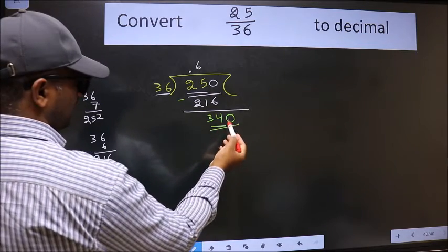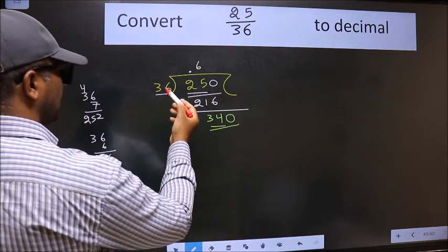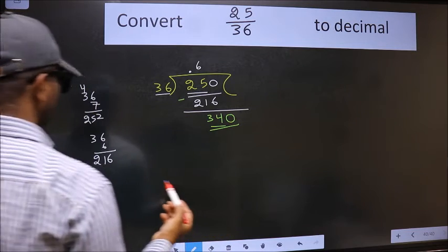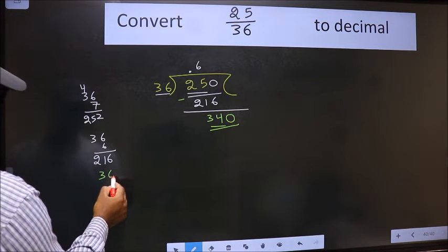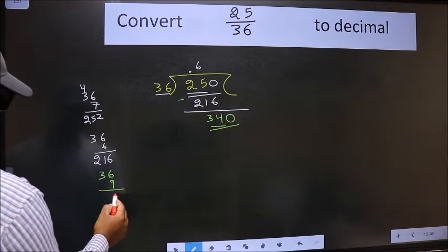So 3, 40. Our number close to 3, 40 in 36 table is, let us check with 9. 9, 6, 54.